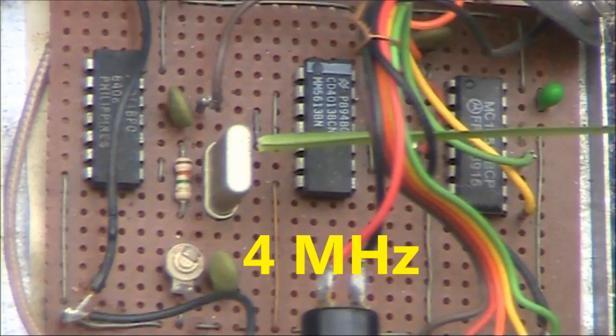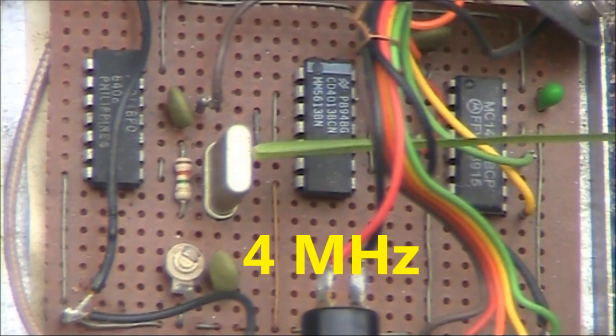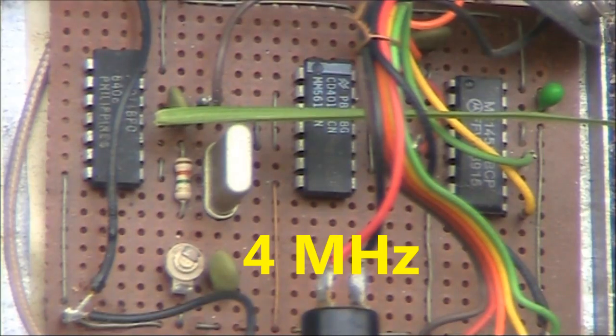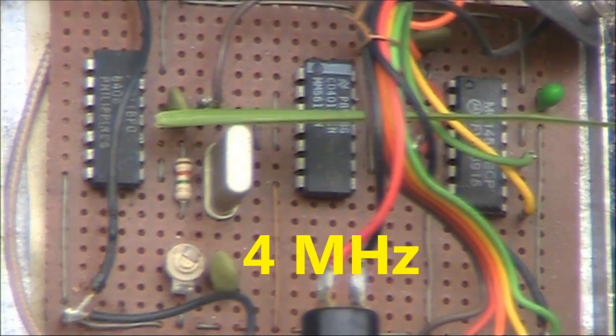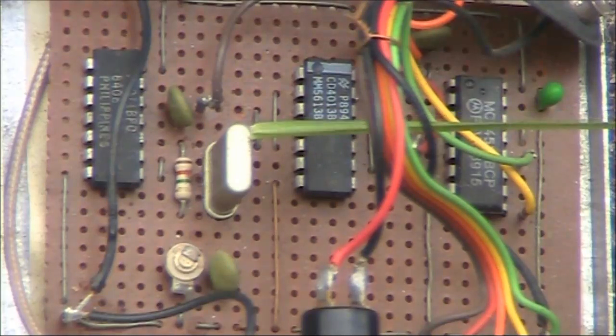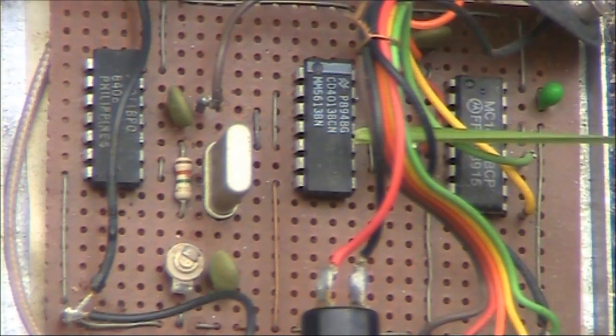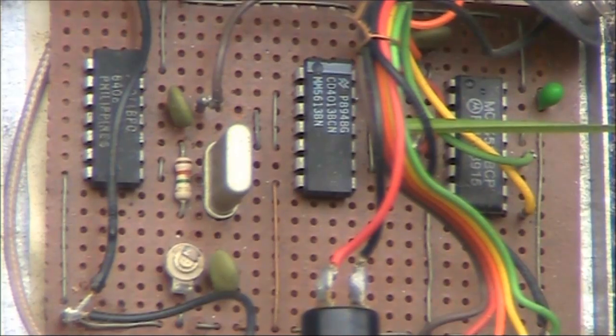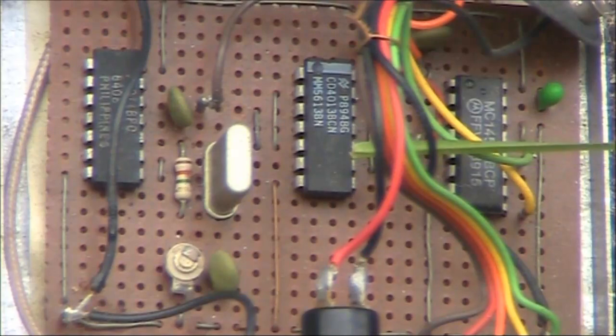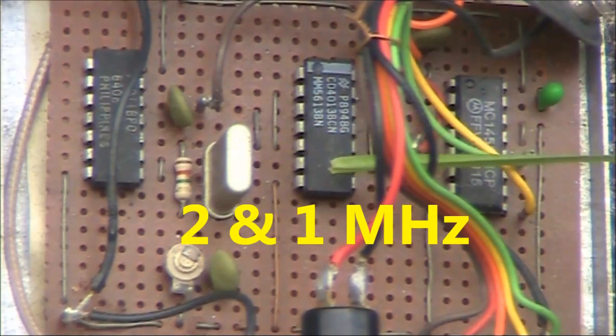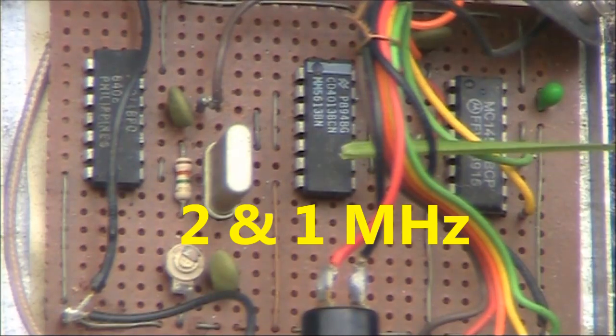The calibrator starts off with the quartz crystal at 4 megahertz. The oscillator IC is a CMOS 4011. Following on from the 4 megahertz generated by the crystal oscillator is another chip, a 4013. That happens to comprise of two divide by twos. That gives you a 2 megahertz output and a 1 megahertz output.